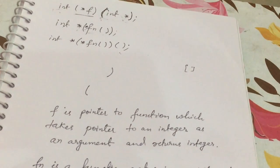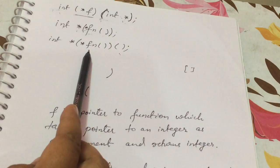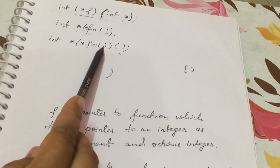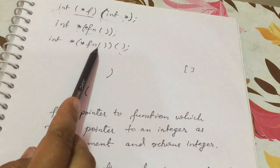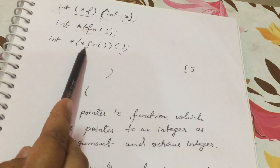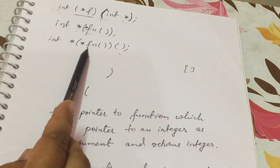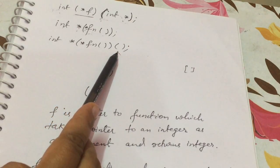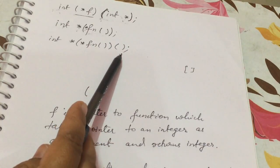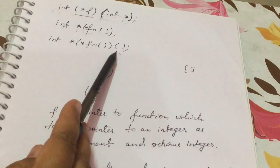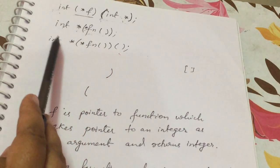In the third question, 'fun' is the identifier. We go to the right-hand side and find the parenthesis of a function, so 'fun is a function returning'. Moving to the left of the identifier, we find a pointer, so 'fun is a function returning pointer to'. Going to the right again, we find another function symbol, so 'fun is a function returning pointer to a function returning pointer to integer'.